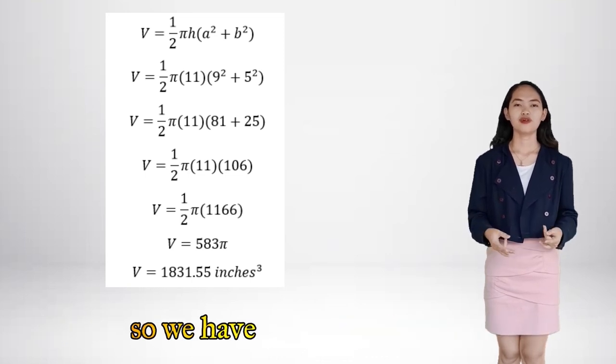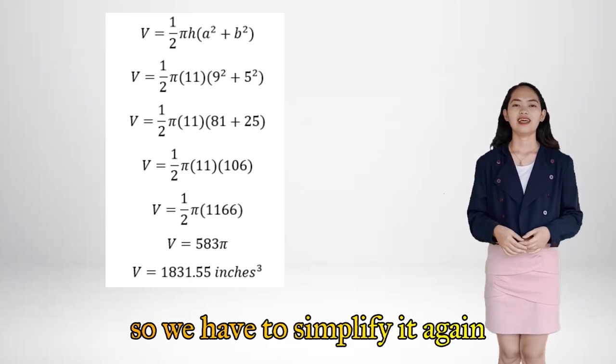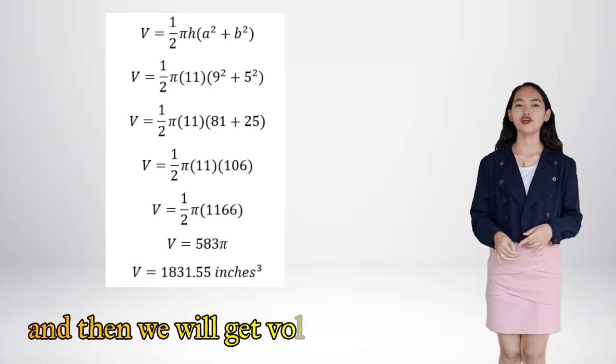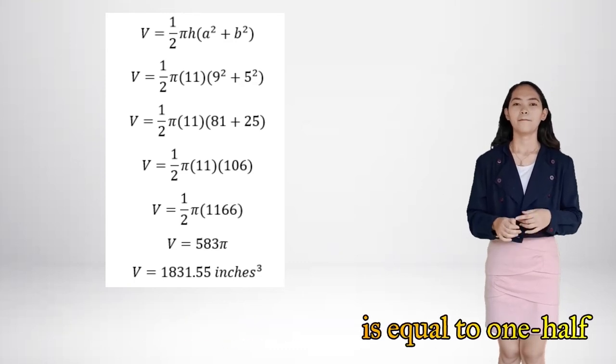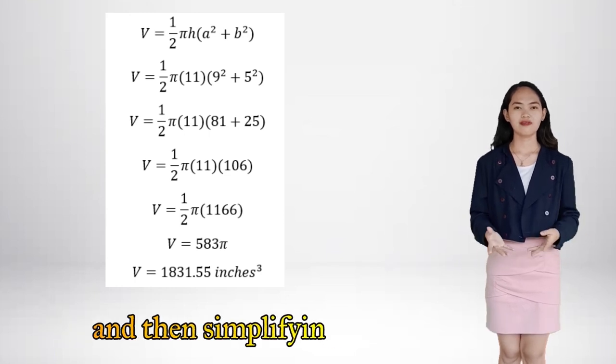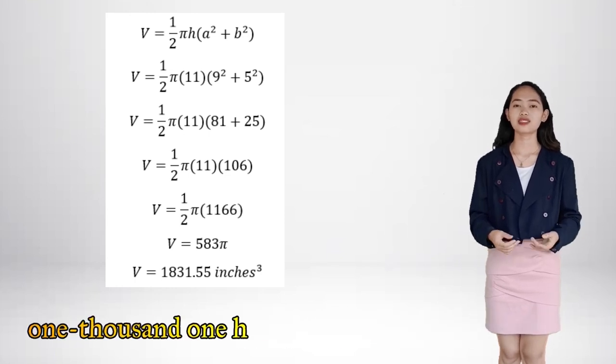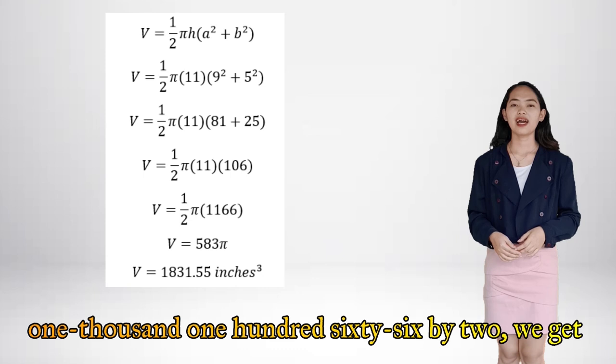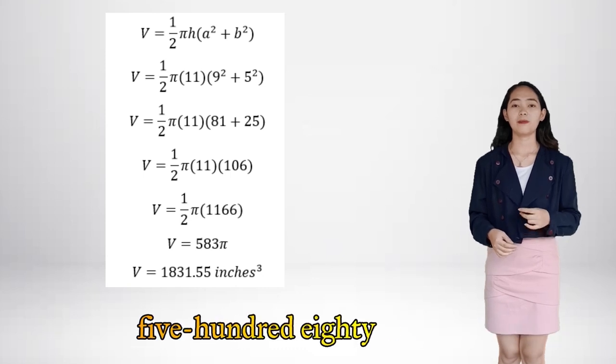So we have to simplify it again, and then we will get volume equals one-half pi times 1,166. And then simplifying it and dividing the 1,166 by 2, we get 583 pi.